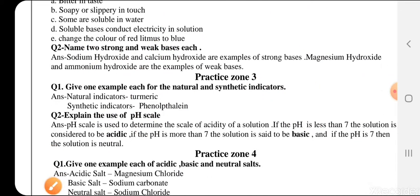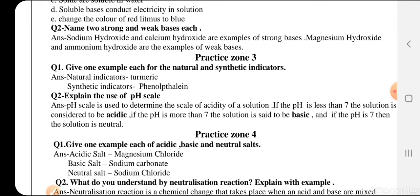Next is: Name two strong and weak bases. Strong bases include sodium hydroxide, calcium hydroxide, and magnesium hydroxide, which is an antacid. Weak bases include ammonium hydroxide, which we use in cleaning tiles or floors - we use it in floor cleaners. Next is Practice Zone 3.